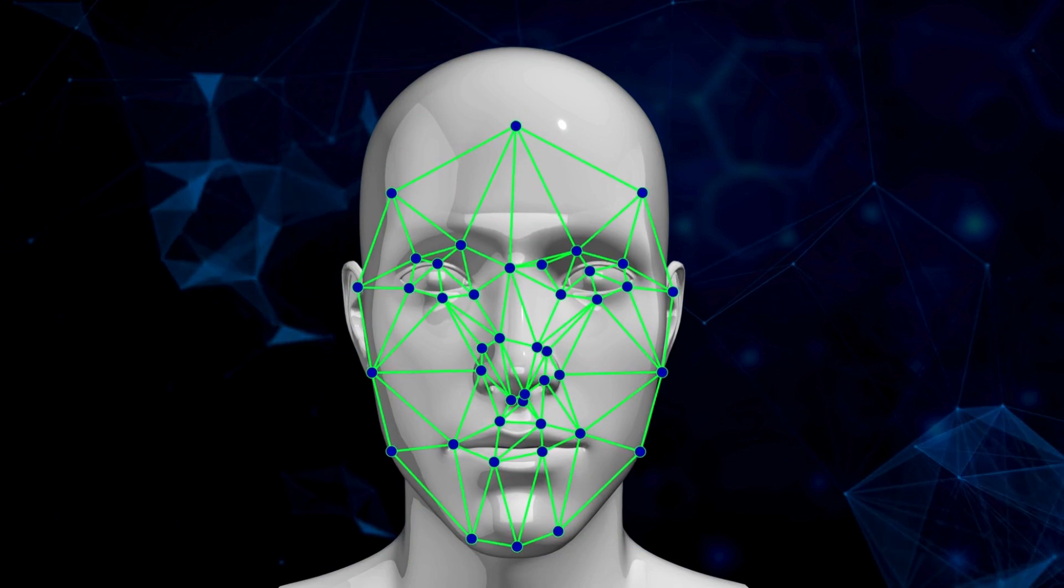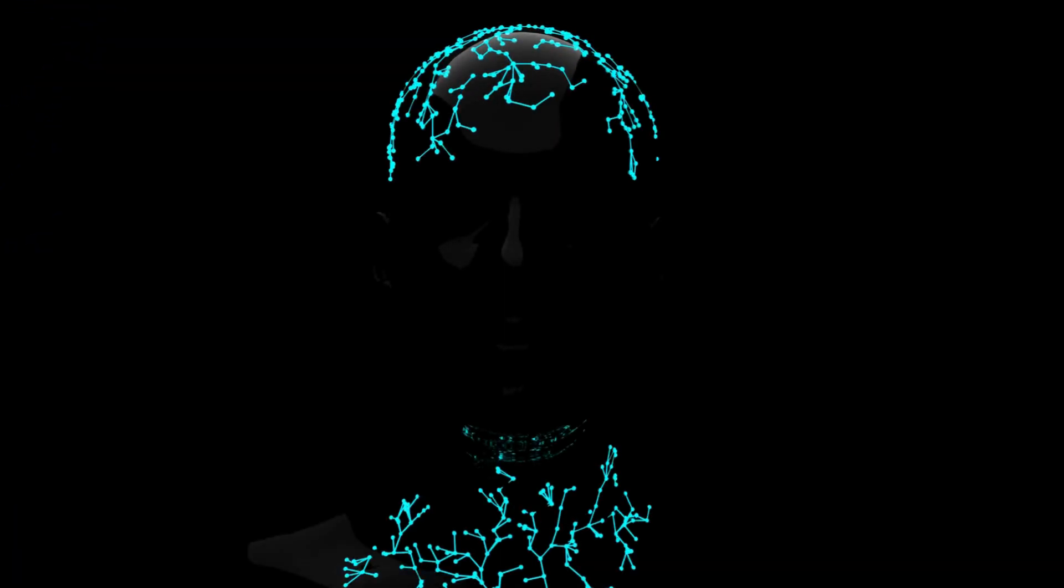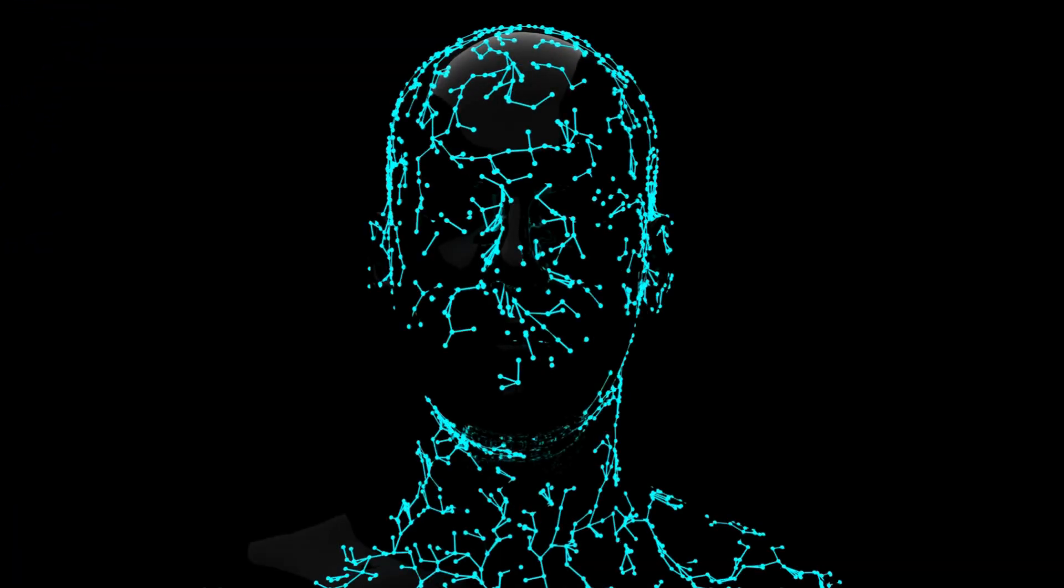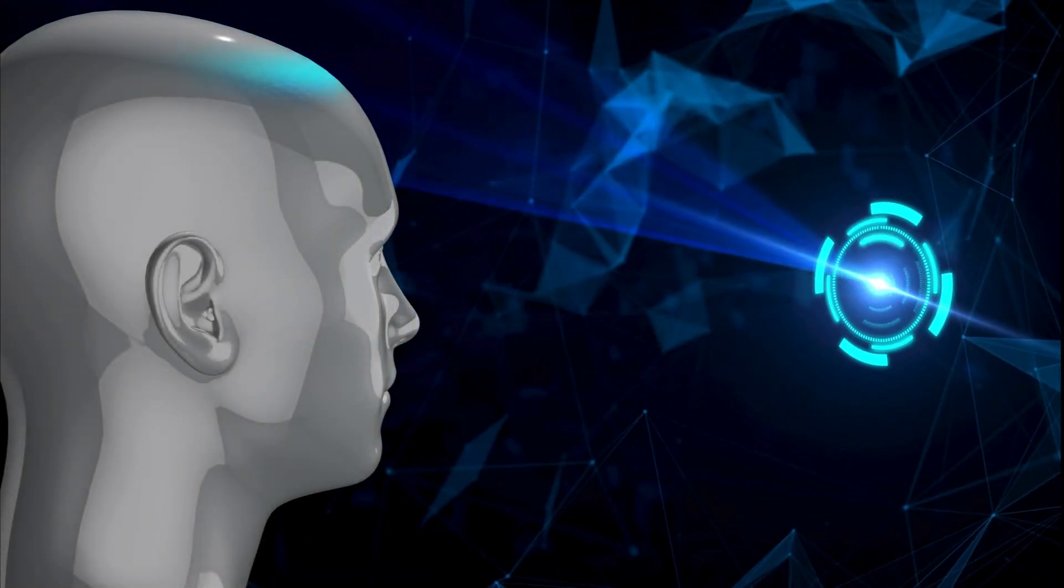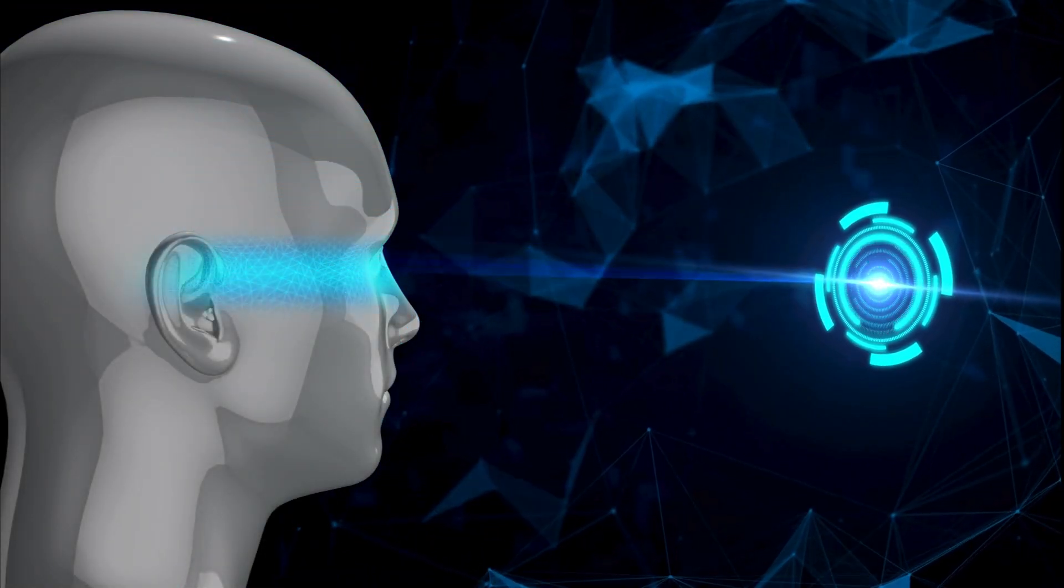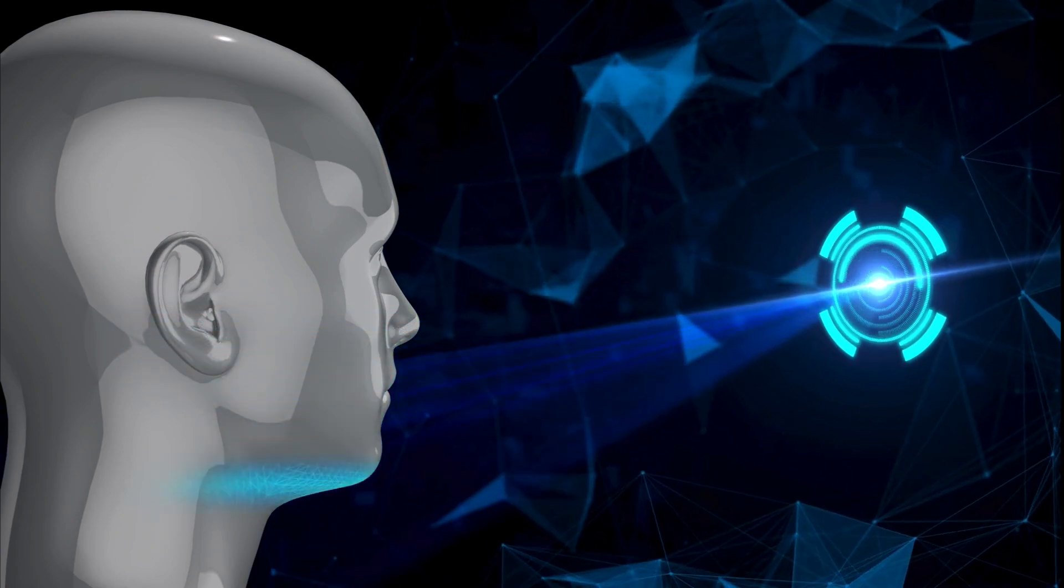The extracted features are used to create a unique facial template which is stored securely on the device. When you attempt to unlock your phone or access a secure feature, the camera captures another image of your face.